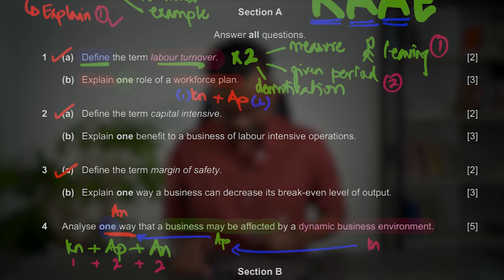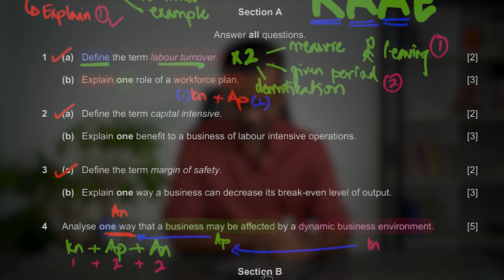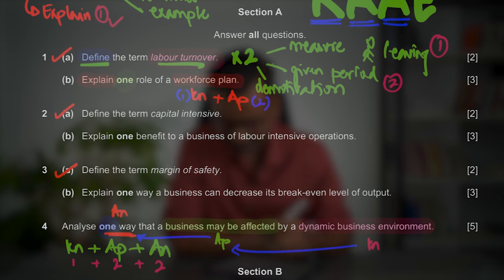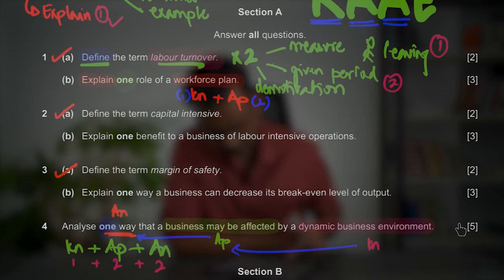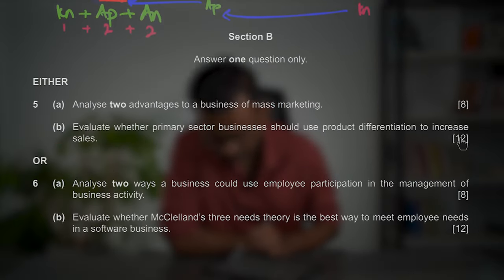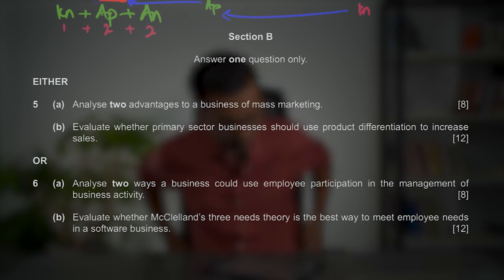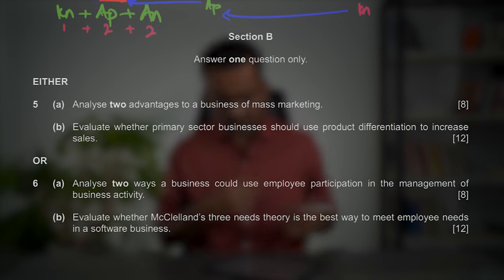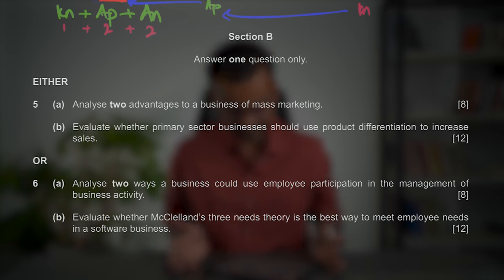Since last year, even the five-marker requires only one point to be discussed. For example, 'analyse one way a business may be affected by a dynamic business environment': identify the concept (dynamic business environment) for knowledge, come up with a business situation for application, and explain the impact — positive or negative — for analysis. Do not skip to Section B before completing Section A: both are worth 20 marks, and shorter questions have less margin for examiner criticism.